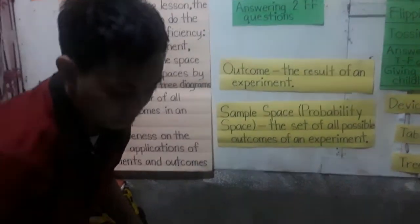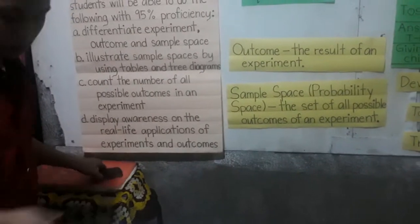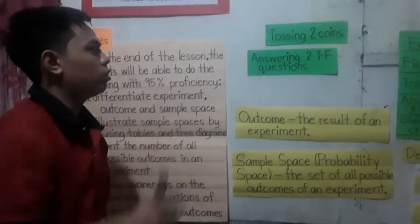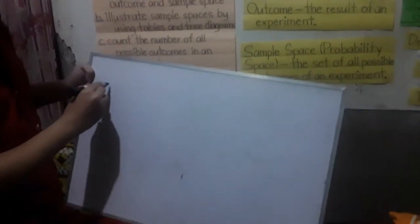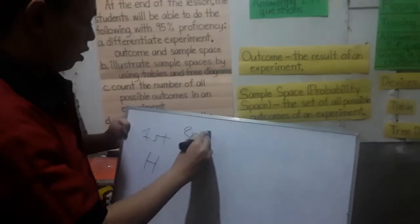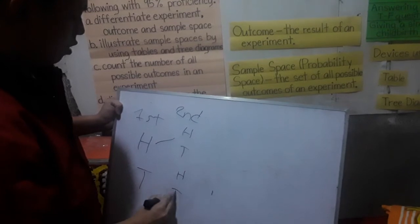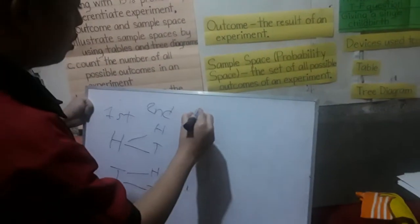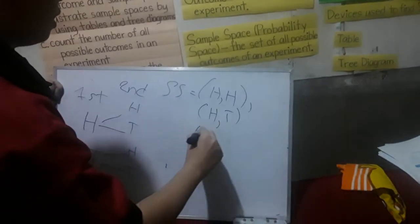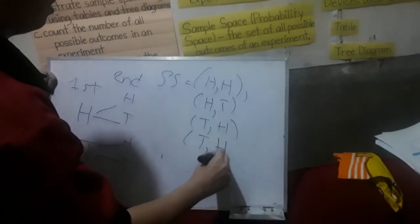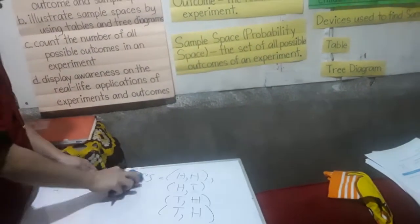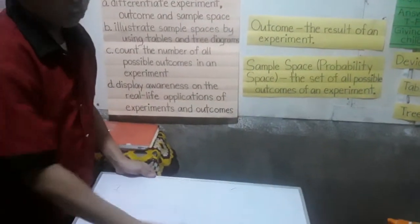Now let's proceed to tree diagram. A tree diagram is different from a table since a table uses columns and rows, while a tree diagram uses branches. For tossing two coins using a tree diagram: the first coin has sample spaces head and tail. For each, the second coin can get head or tail. So your sample spaces are head-head, head-tail, tail-head, and tail-tail. Who will answer the second problem — answering two true or false questions?